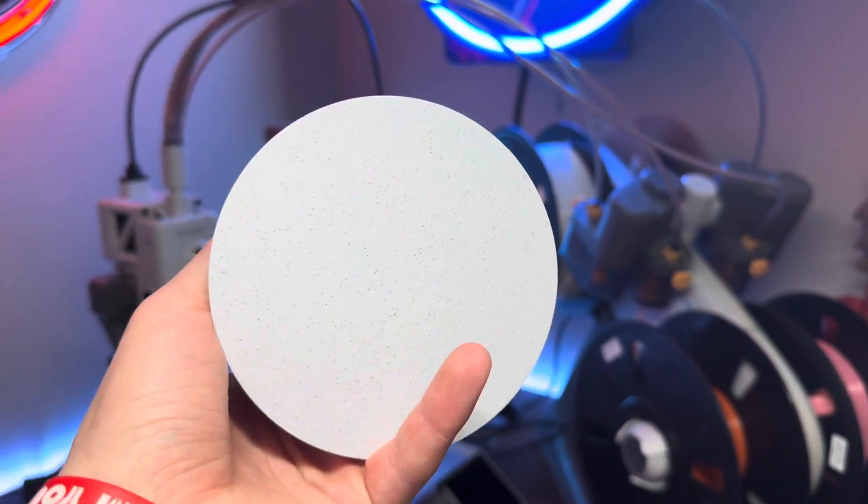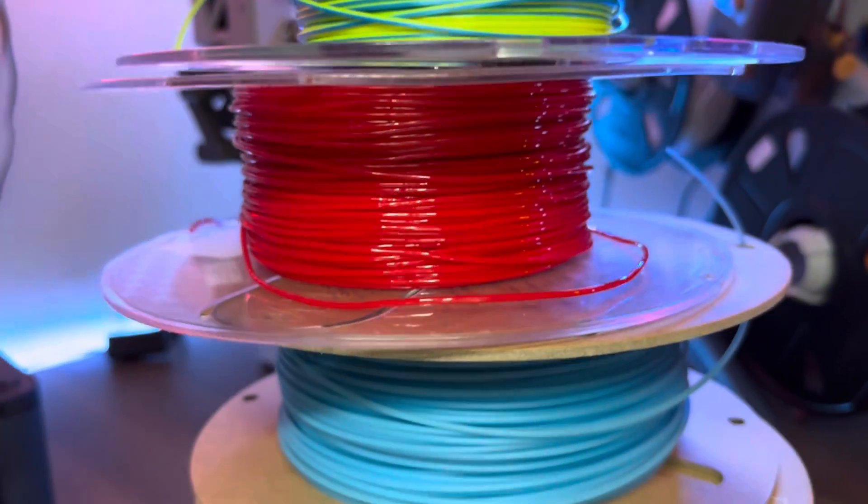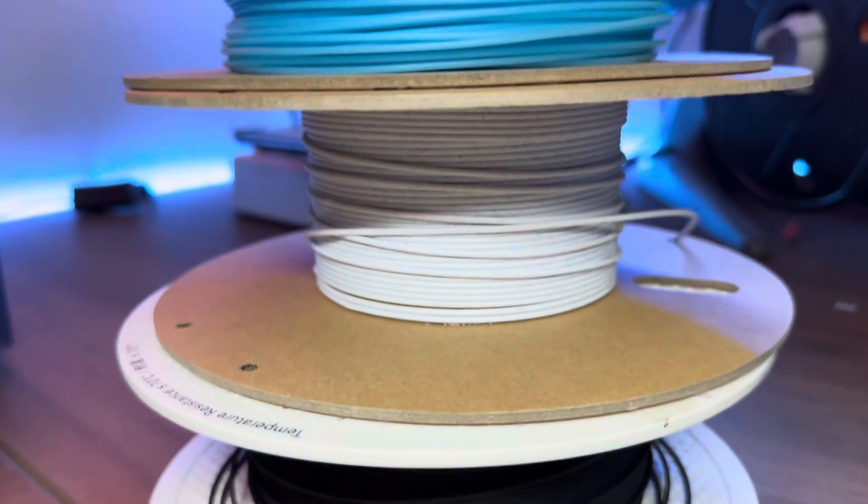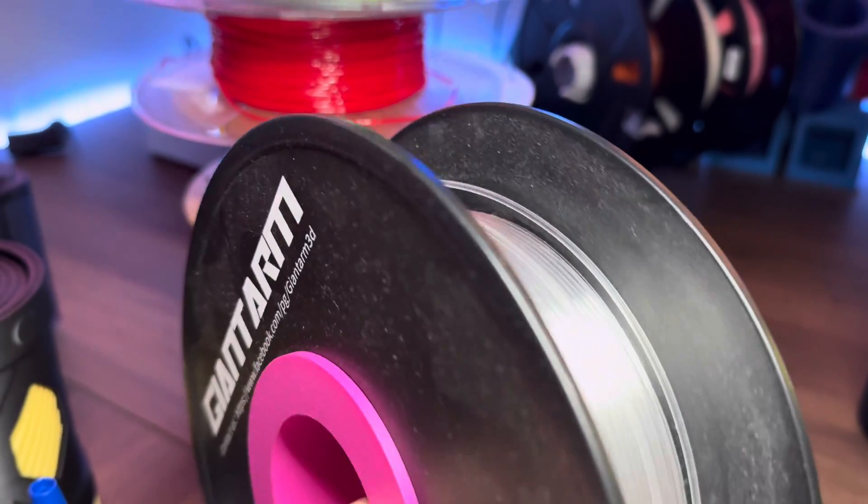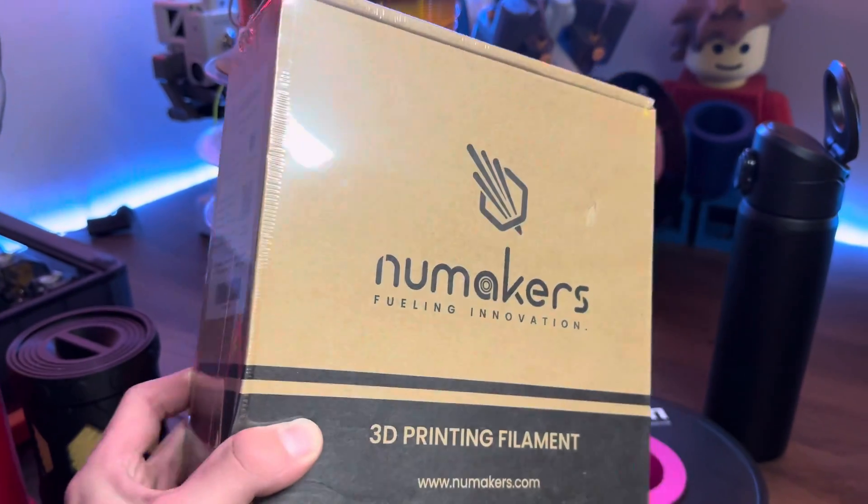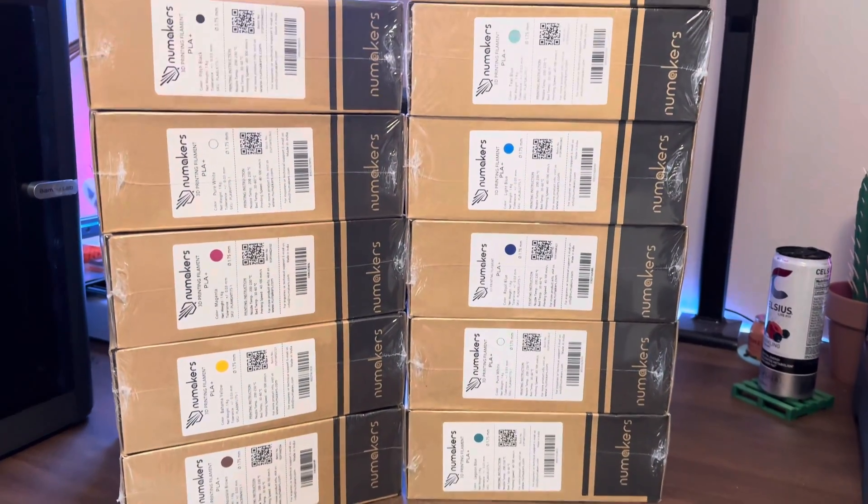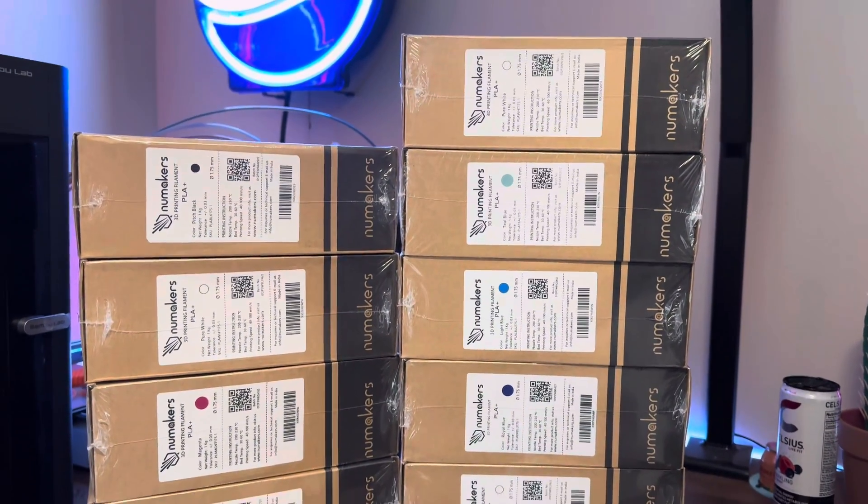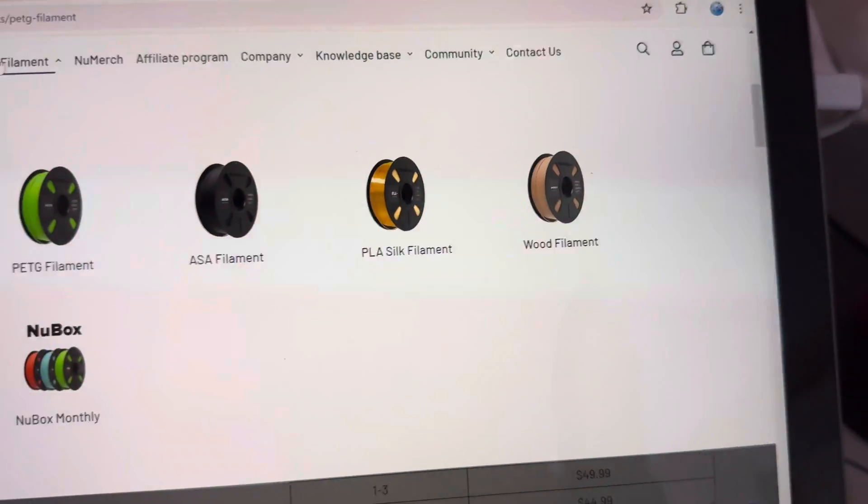All these filaments are great, but what brand should you be buying from? Before I even start, I'm not sponsored or told to say any of this by any of these companies, I just really like these filaments, and these are my honest opinions. My personal favorite brand for filament is NuMakers. They offer really good filament that's very affordable, and it comes in great packaging. They have PLA, ABS, ASA, PETG, silk PLA, and PLA wood.